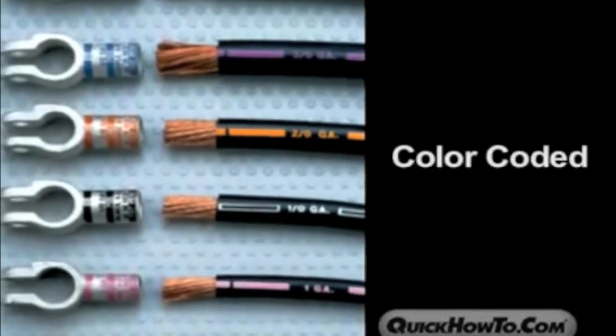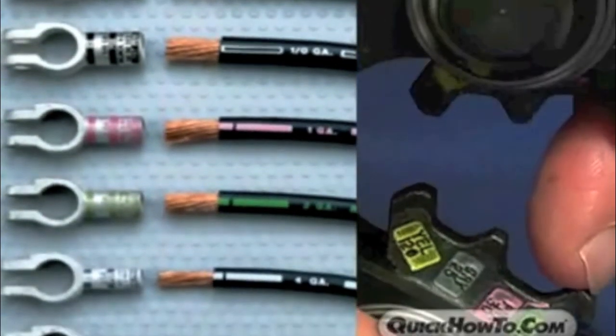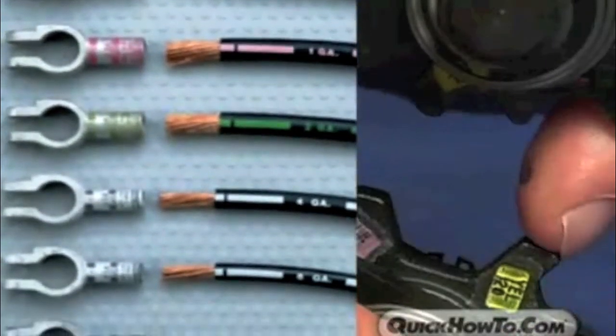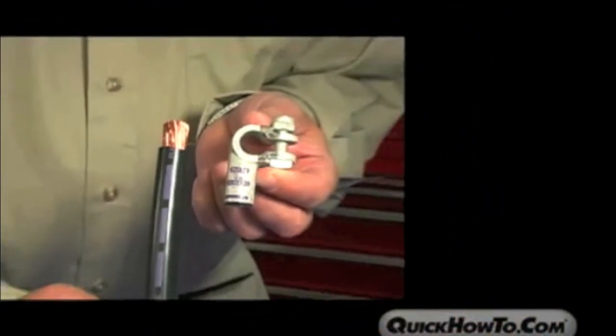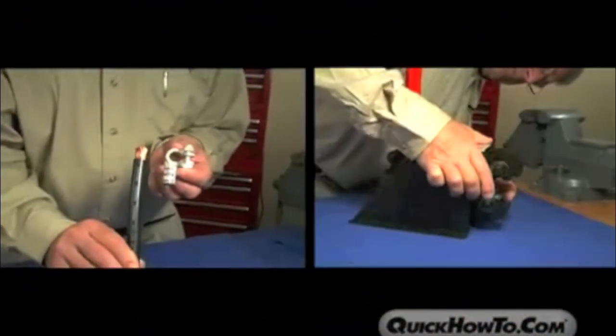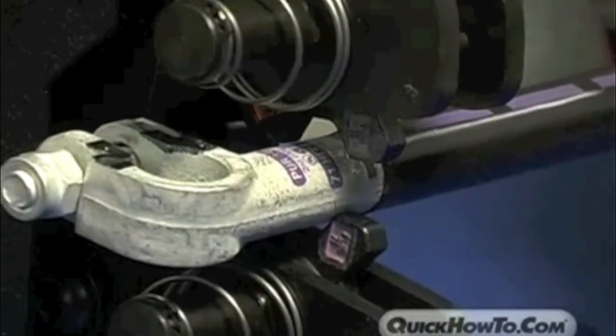Another unique feature is that Quick Cable's battery cable is color-coded to match the appropriate connector and die setting of the hex crimp crimper. For example, a 3-aught gauge cable has a purple color strip that will match the purple lettering on the 3-aught gauge Quick Connector and the purple setting on the hex crimp crimper.